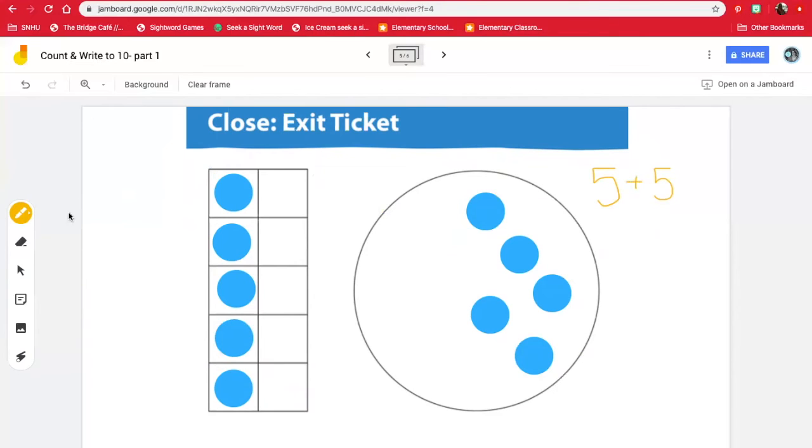Let's try another way. Let's take some out. So now I have three in my 10 frame and how many in the circle? One, two, three, four, five, six, seven. That means three and seven make 10.